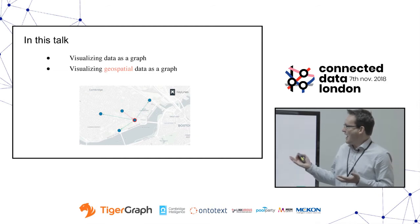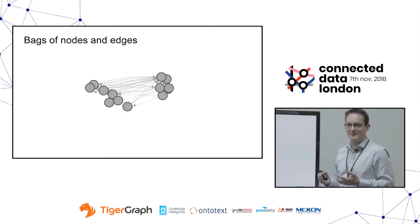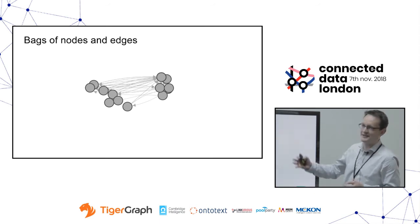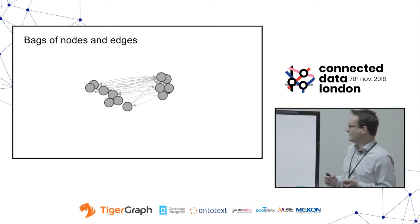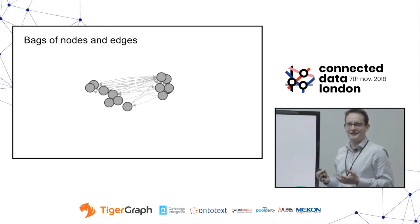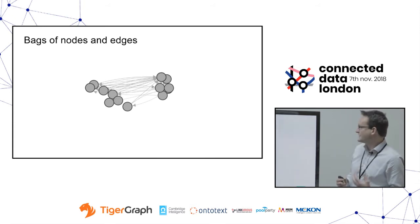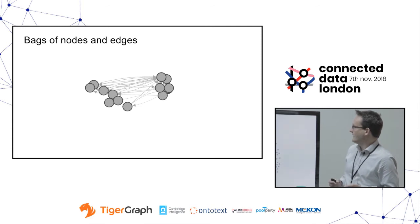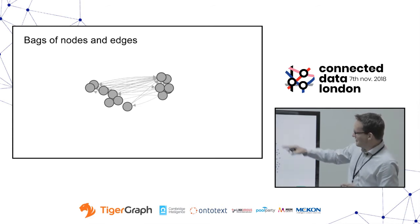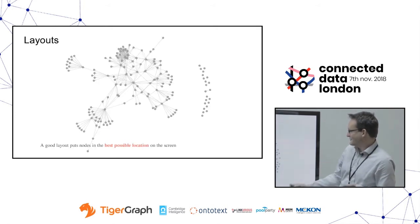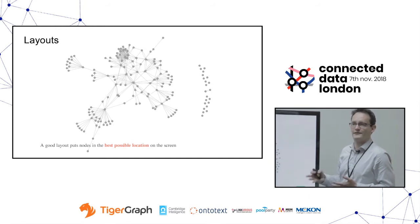So what is a graph? A big bag of nodes and edges is really what a graph is. When you try and visualize a big bag of nodes and edges, what you typically get is a bit of a mess, because all you've got is the fact that this is a node and it connects to this node. One of the first challenges is figuring out where to put these nodes on the screen. We call that a layout. A layout is basically the positioning of nodes on a screen, and my definition of a good layout is that it puts nodes in the best possible location on the screen.